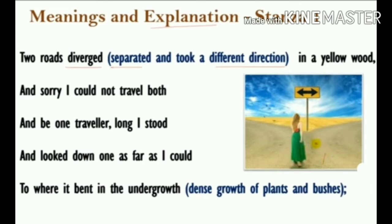He was the only traveller passing by that forest area and he stood at that junction point, looking down one road till the point to where it bent in the undergrowth. Here undergrowth means dense growth of plants and bushes. In this stanza the poet wants to tell that one morning, while passing by the yellow wood in autumn season, he reached a junction where the road split into two directions.